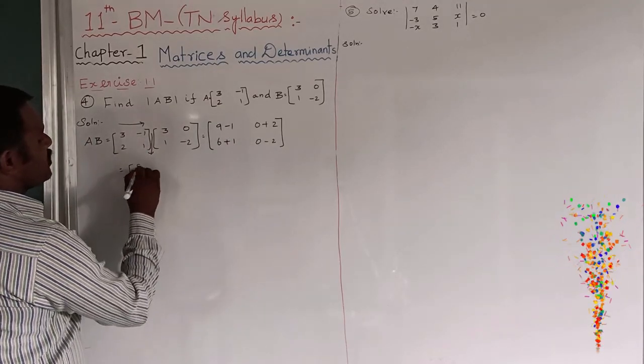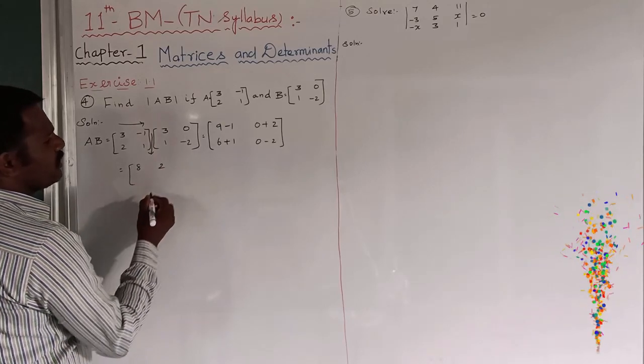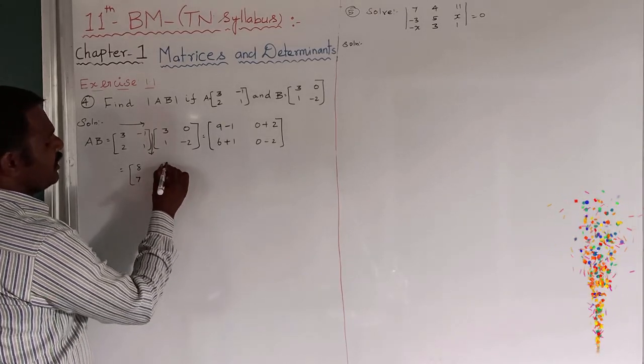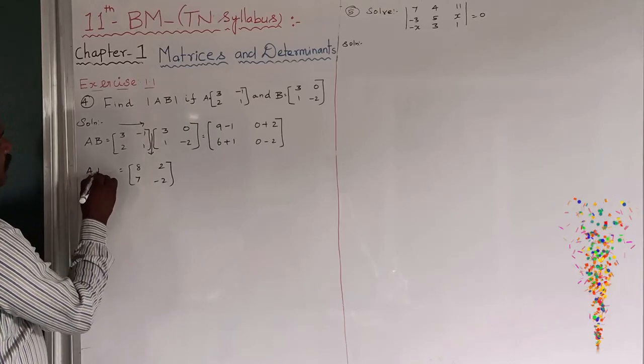So, 9 minus 1 is 8. 0 plus 2 is 2. 6 plus 1 is 7. Minus 2. This is AB.